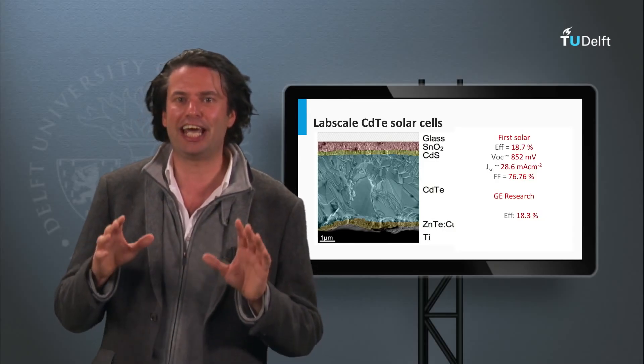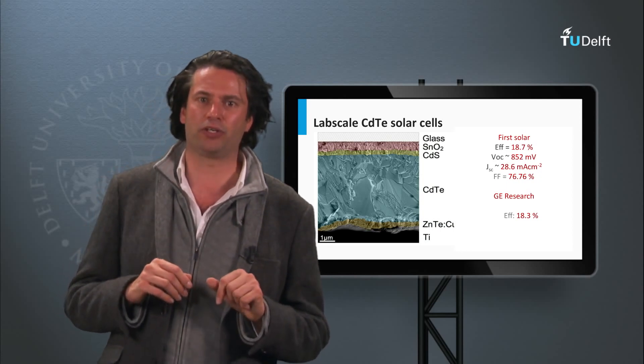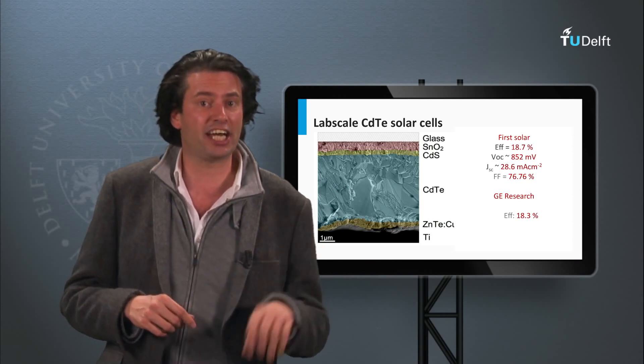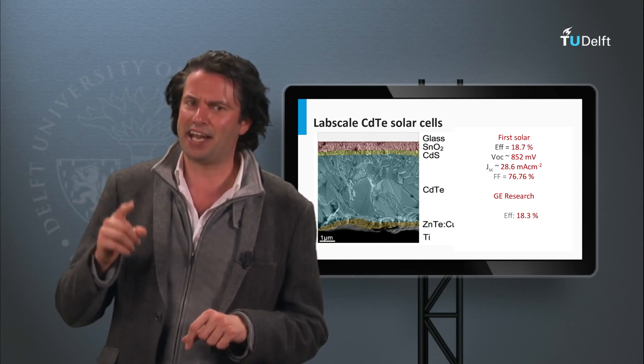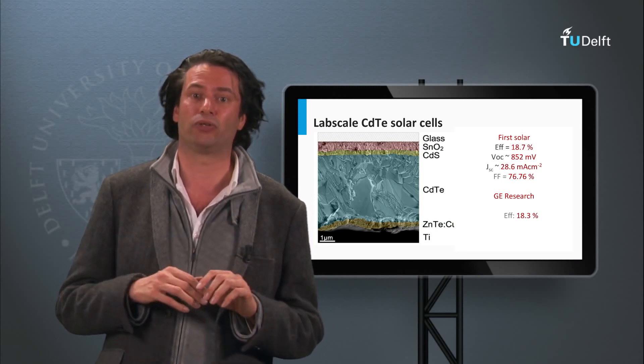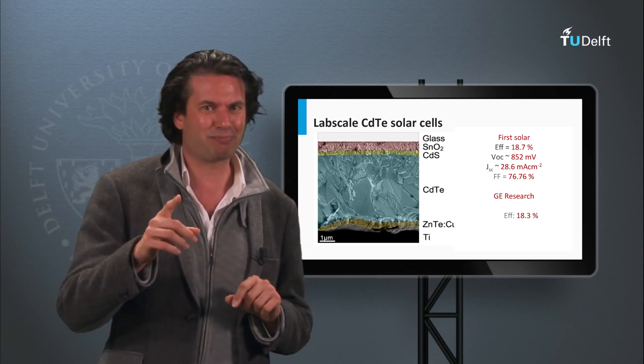So far, we have discussed the inorganic thin-film semiconductor materials, like amorphous and nano-crystalline silicon, CIGS and cadmium telluride solar cells. In the next block we are going to look at organic and dye-sensitized solar cells. See you in the next block!